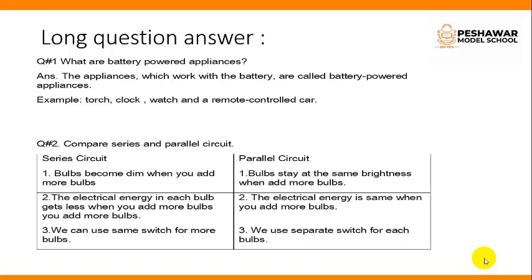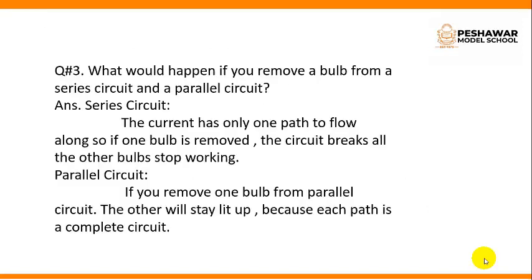In parallel circuit, bulbs stay at the same brightness when you add more bulbs. The electrical energy is the same when you add more bulbs. We use a separate switch for each bulb.